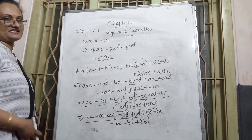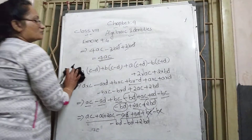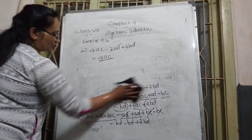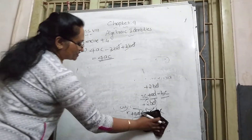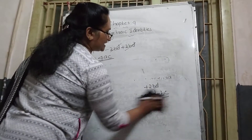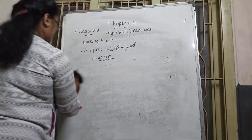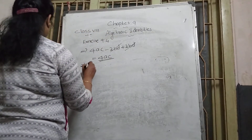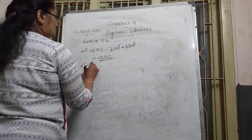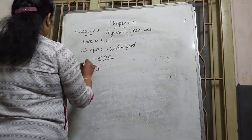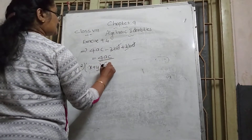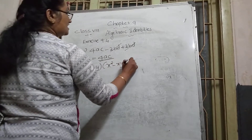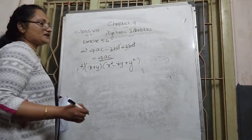I hope you can understand how to solve this. Next, we go through the second question using the same process. The second question is: (x + y)(x² − xy + y²).